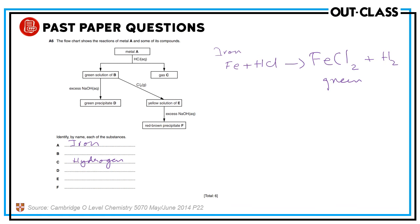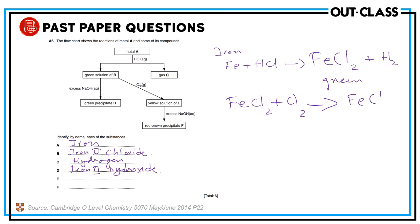The color of the salt indicates the metal. B is iron(II) chloride — you must write iron(II) chloride, not just iron chloride, because iron(III) also exists. Iron(II) chloride with sodium hydroxide gives a green precipitate of iron(II) hydroxide. Chlorine is an oxidizing agent, so it oxidizes iron(II) to iron(III) chloride — a yellow solution. E is iron(III) chloride, and iron(III) chloride with sodium hydroxide gives a red-brown precipitate of iron(III) hydroxide.